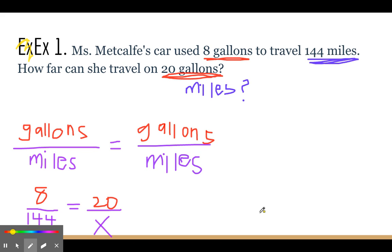Now we have a proportion set up, so we want to solve for that X to find that miles that we're missing. So we're going to cross multiply through that equal sign. We multiply whatever is on our top times whatever is on the bottom of the other ratio, whatever is on our bottom of the first one times whatever is on our top of the second ratio. So 8 times X equals 144 times 20.